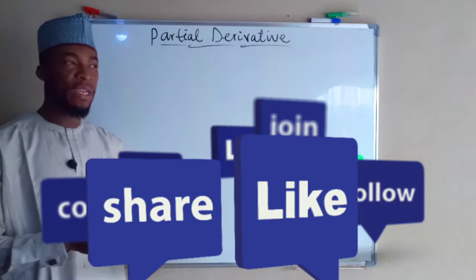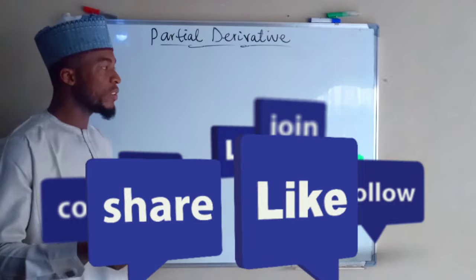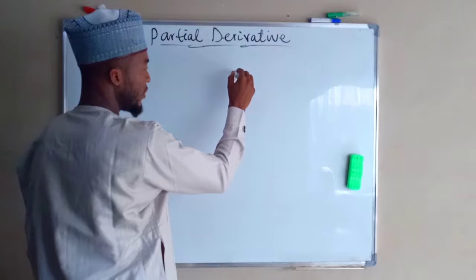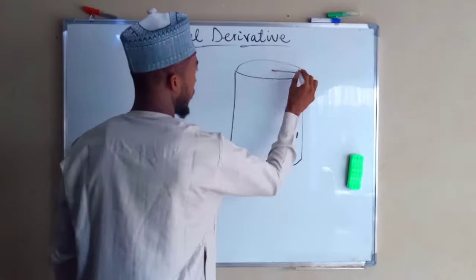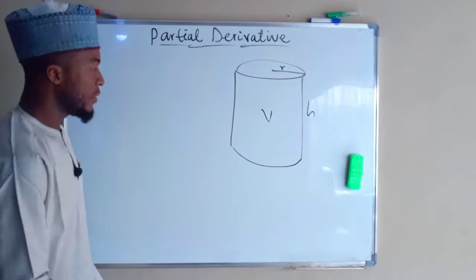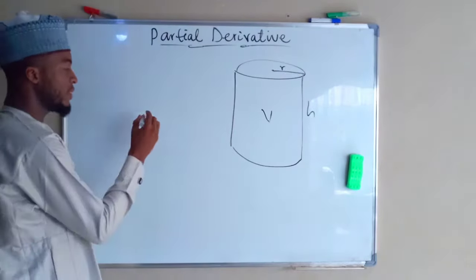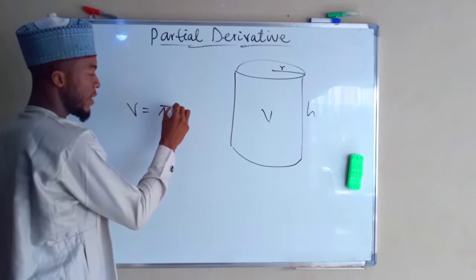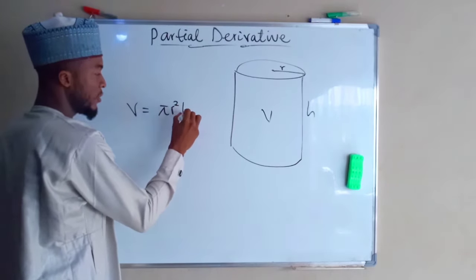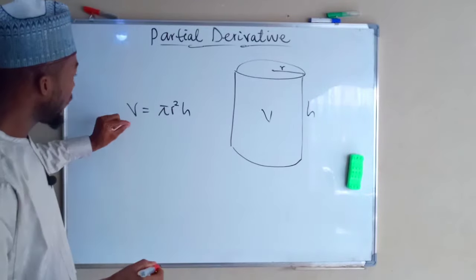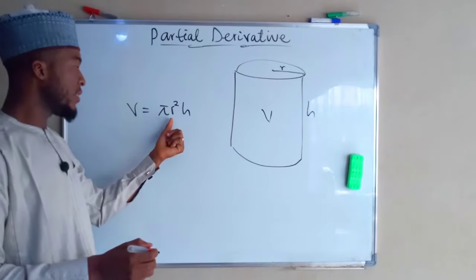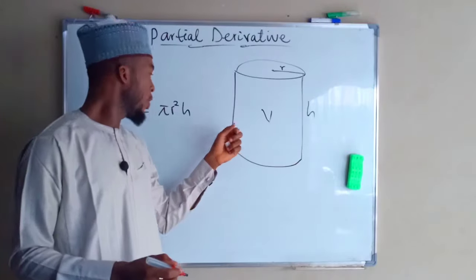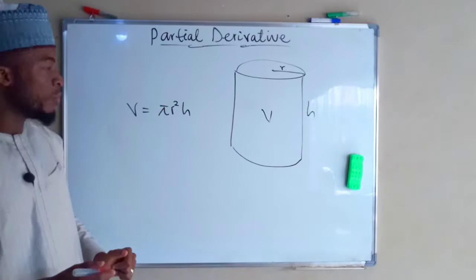To understand this concept clearly, let us consider the volume of a cylinder. If this is a cylinder, the volume of this cylinder will be pi r squared h. Therefore, the volume depends on two quantities — the radius and the height of this cylinder — while pi is constant here.